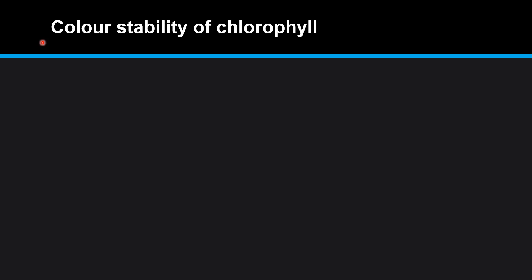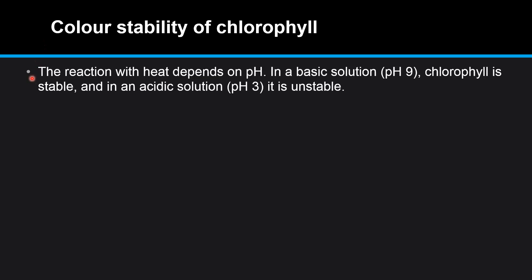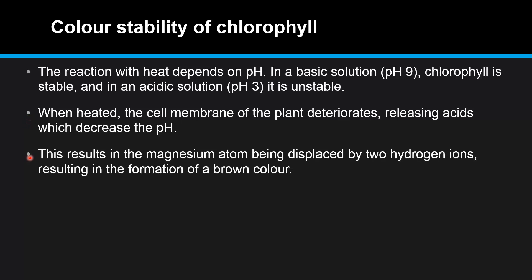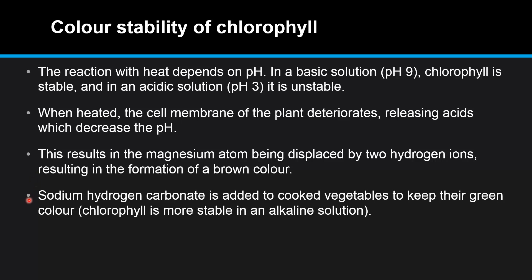Color stability of chlorophyll. The reaction with heat depends on the pH. In a basic solution at pH 9, chlorophyll is stable, and in an acidic solution at pH 3, it is unstable. When heated, the cell membrane of the plant deteriorates, releasing acids which decrease the pH. This results in the magnesium atom being displaced by two hydrogen ions, resulting in the formation of a brown color. Sodium hydrogen carbonate is added to cooked vegetables to keep their green color, as chlorophyll is more stable in an alkaline solution.